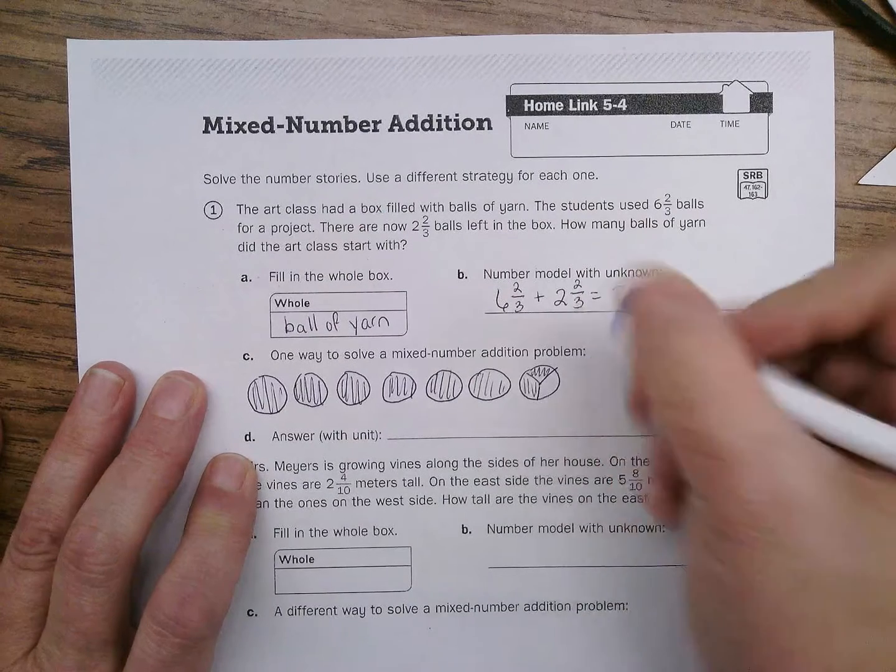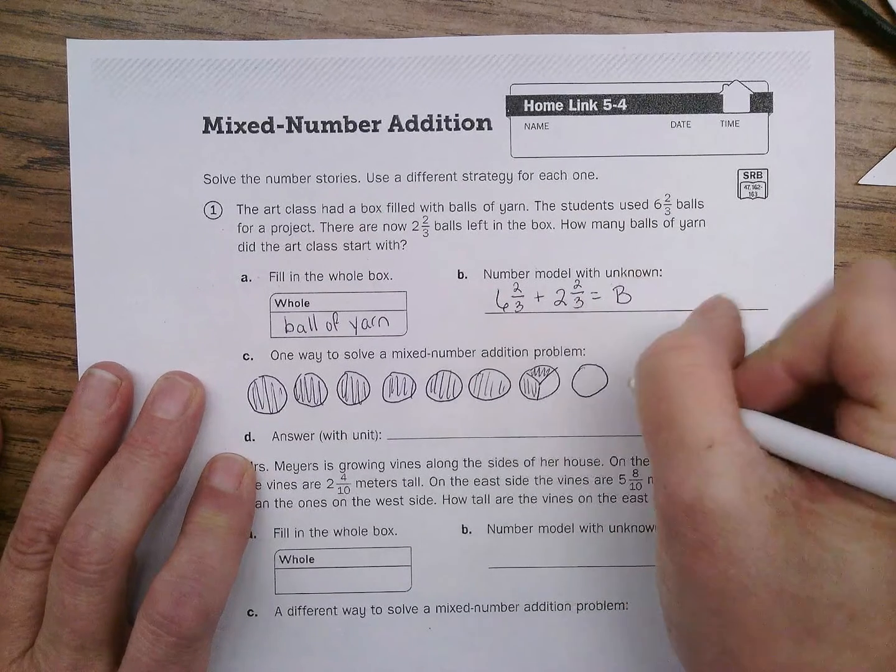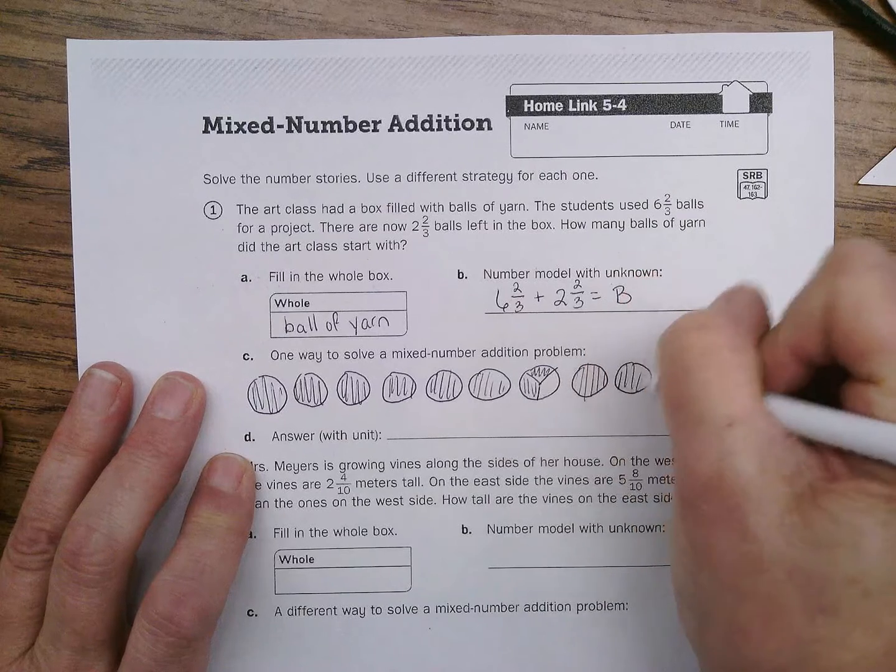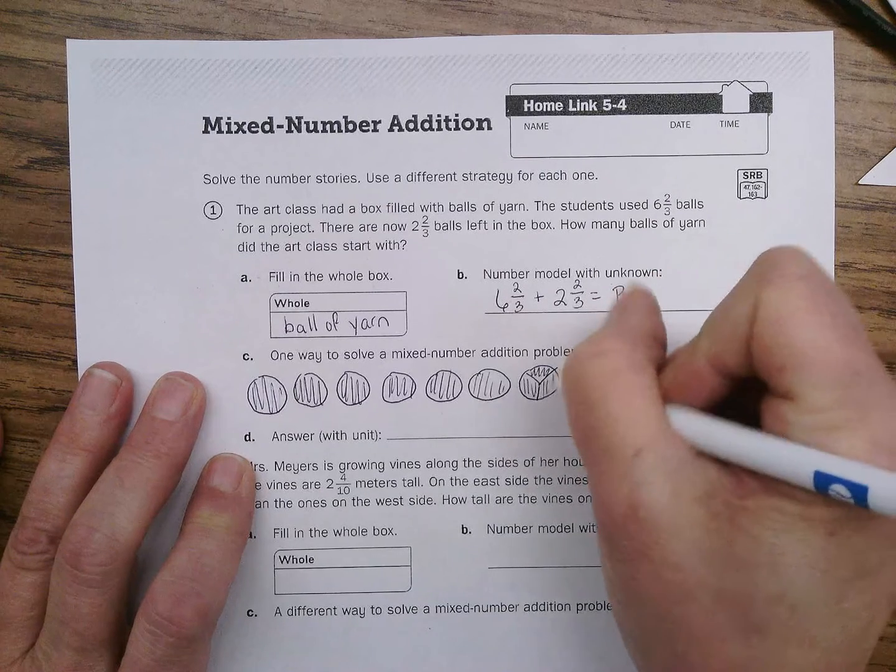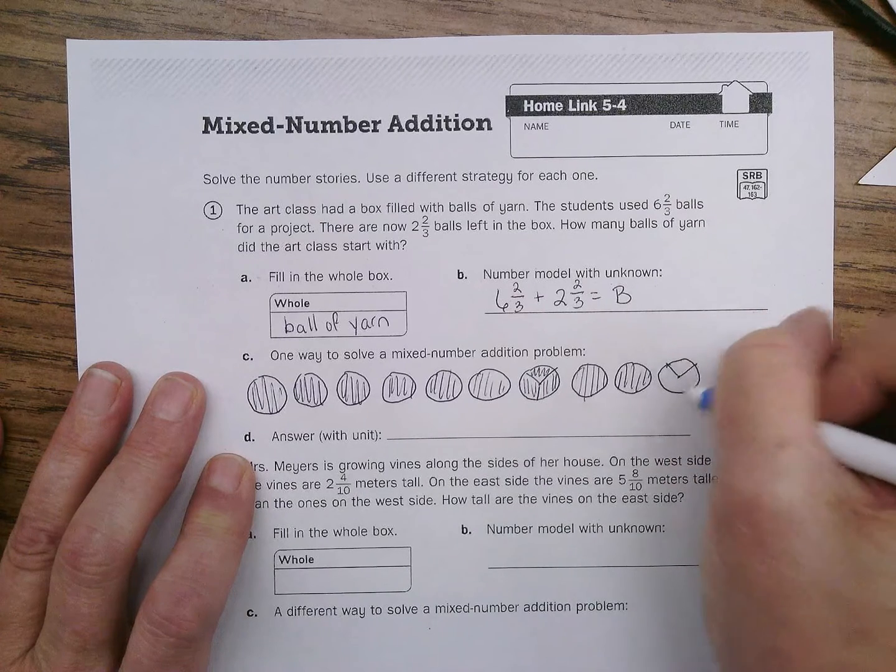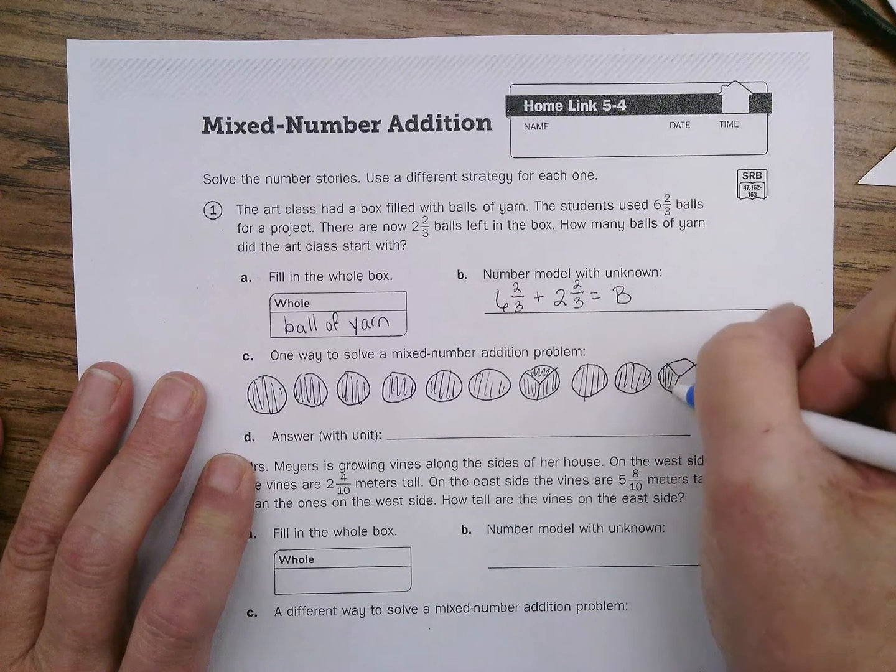And then we're going to add two and two-thirds, so we're going to add two more wholes. One, two. There's one, two, and then two-thirds. Well, I've got one-third here, and then I'm going to shade in one of these thirds like that.